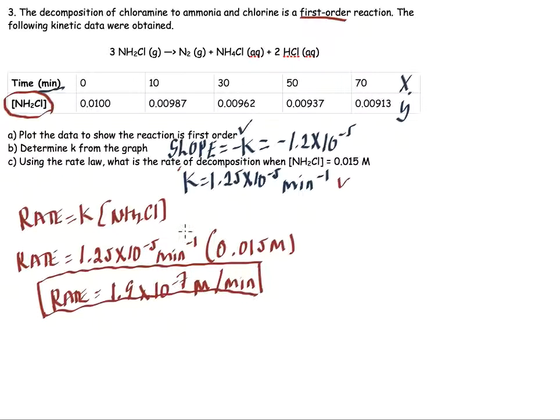Okay, so that's our final answer here. So we have the reaction rate, we have the value of k, and we have a nice linear plot. That's how you solve this problem.